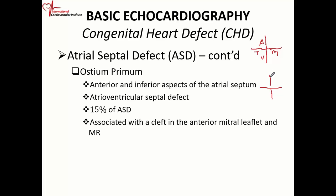Usually when patients have an ostium primum defect, they will also have a cleft mitral valve — a problem with the mitral valve. They can have a cleft in the anterior mitral leaflet, and that usually goes together with the defect.